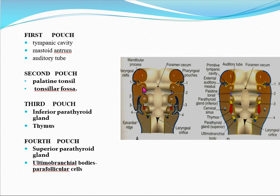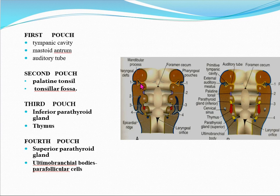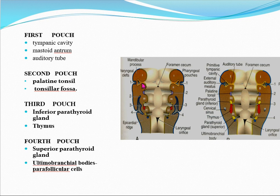The first pharyngeal pouch is an invagination of the endoderm with a stalk-like structure. This is going to give rise to the tympanic cavity, mastoid antrum, and auditory tube. The dilated portion transforms into the tympanic cavity and mastoid antrum, whereas the stalk-like portion gives origin to the auditory tube, also called the Eustachian tube, which in future connects the tympanic cavity to the pharynx.